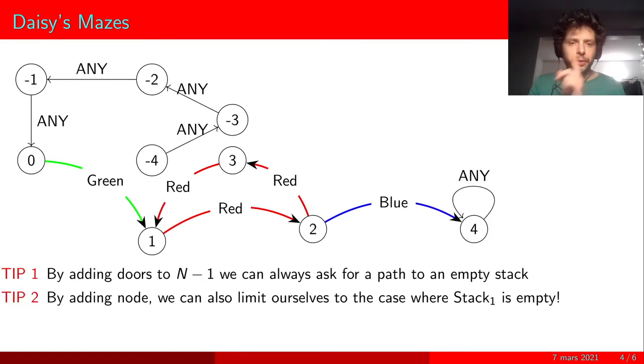Then the second trick is a bit harder to see, but by adding some special nodes at the beginning that will add cards to our stack, we can limit ourselves to the case where stack 1 is empty. Here we will not only look for a path from 0 to 4, and if we find such a path, it means that an empty stack is possible.